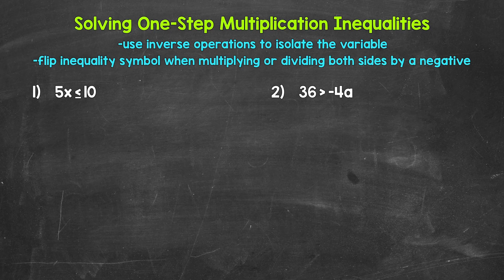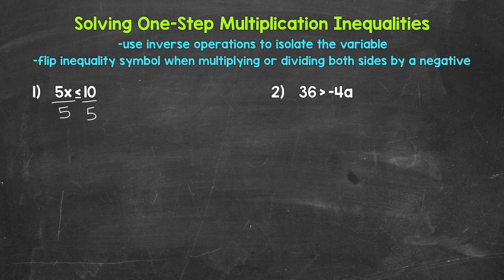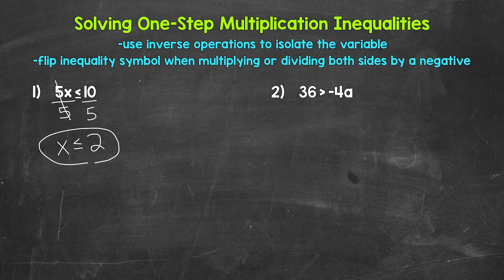Let's jump into number one, where we have 5x is less than or equal to 10. We need to isolate x. X is being multiplied by five, so we need the inverse operation of multiplication — that's division. So divide the left side of the inequality by five. Whatever we do to one side of an inequality, we must do to the other to keep it balanced. So divide the right side by five as well. These fives cancel each other out, and x is now isolated. So we have x is less than or equal to, and then on the right side, 10 divided by five gives us two.